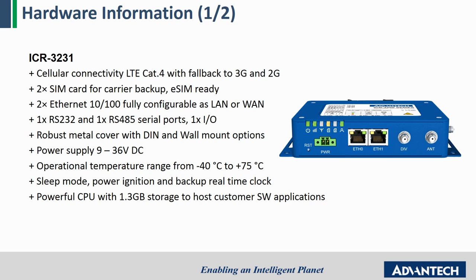Now let's talk about the hardware features of the gateway. The ICR 3231 gateway supports cellular LTE 4G connectivity with a fallback to older 3G and 2G networks. Two SIM cards can be used for redundancy on the mobile carrier level. The gateway is equipped with two Ethernet ports and two serial ports RS232 and RS485. Ruggedized industrial design allows operation in a wide temperature range with mounting options to DIN rail or wall mount. The powerful CPU with the Linux operating system ensures smooth, stable and secure operation.